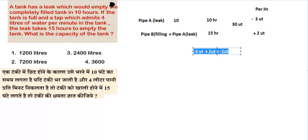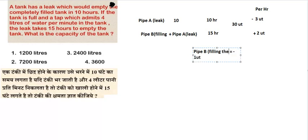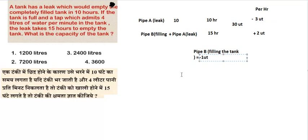Subtracting equation 1 from equation 2, we get minus 1 unit. So pipe B which is filling the tank contributes 1 unit. The total capacity of the tank is 30 units.